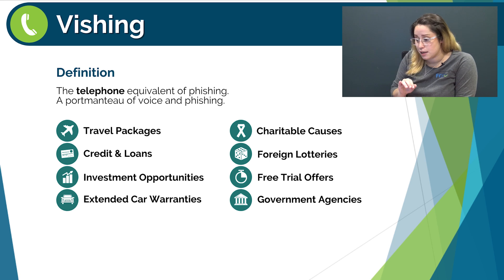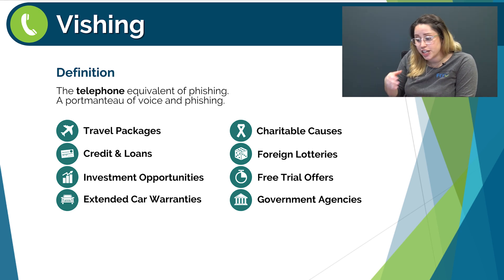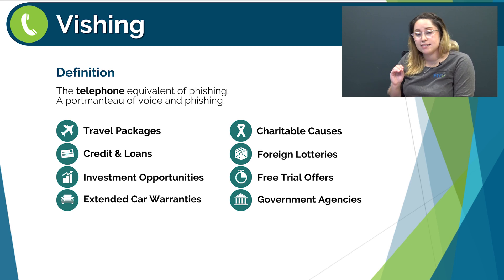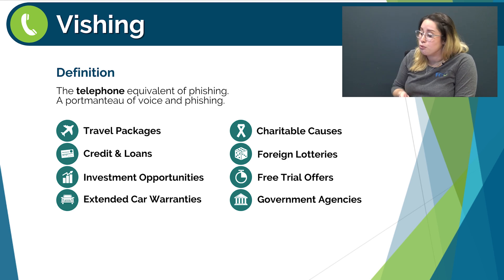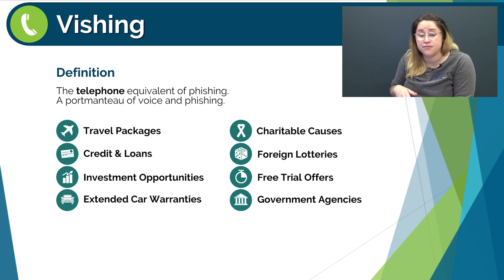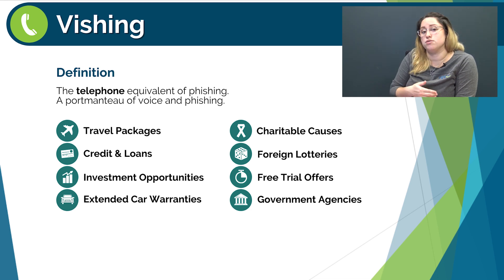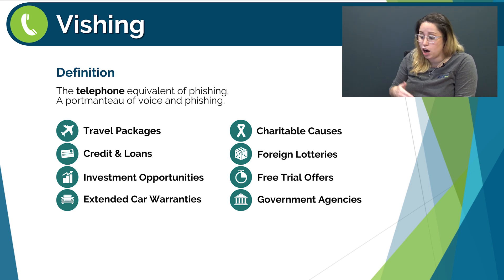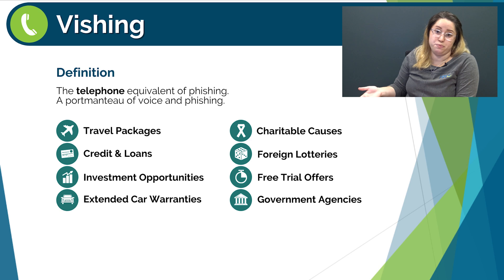Next, let's talk about vishing. Vishing is a portmanteau of the words 'voice' and 'phishing' — it's the telephone equivalent of phishing. Vishing can come in a variety of flavors, including travel packages, credit cards and loans, investment opportunities, extended car warranties, charitable causes, foreign lotteries, free trials, government agencies like the IRS, and many more. If you receive a phone call that you suspect is phishing but want to verify just in case, politely describe to the caller that you would like to verify their identity off the phone before disclosing any information. Hang up, then research that person or organization online or through any other reputable source and call back the phone number listed there. Do not use resources provided by the caller to verify their identity because they could be feeding you bad information.